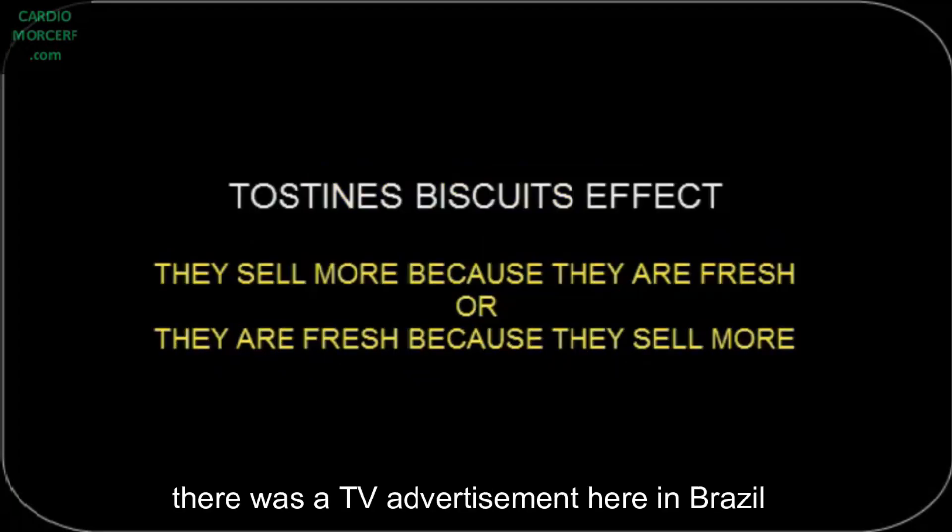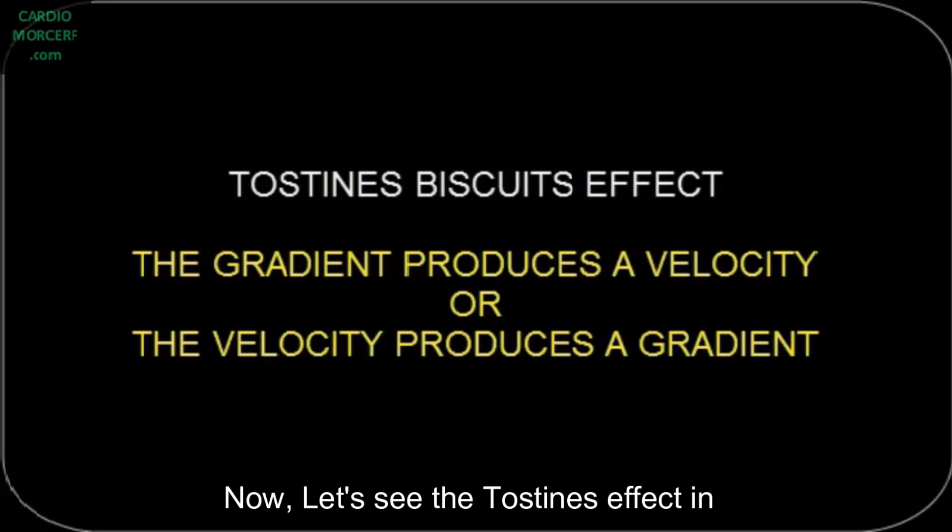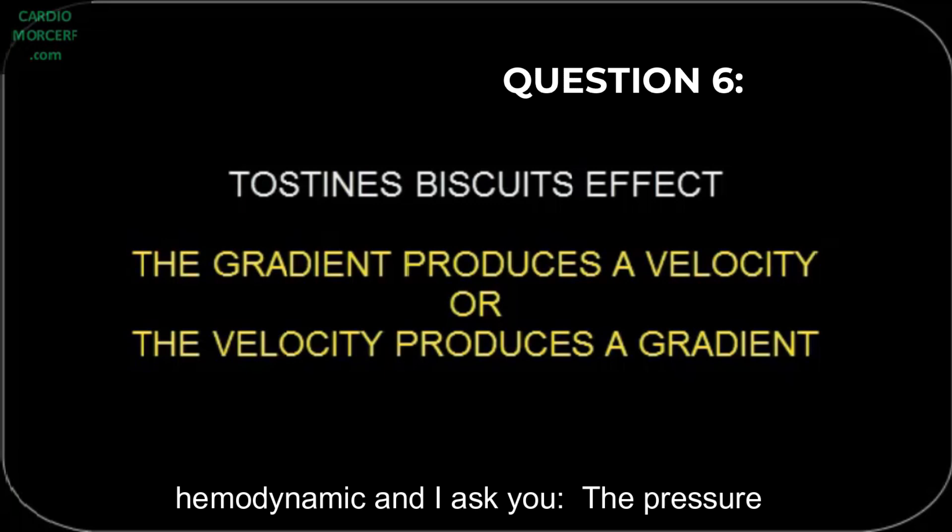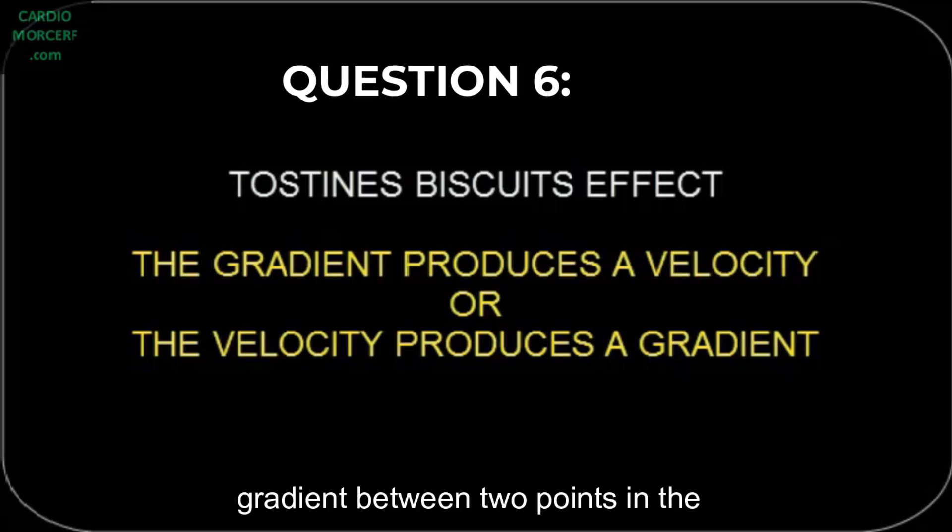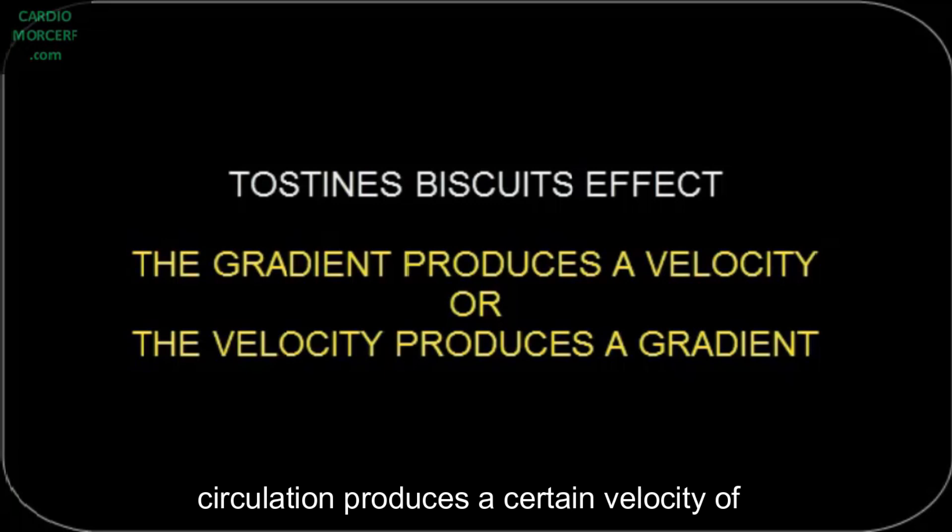Many years ago, there was a TV advertisement here in Brazil of a biscuit cracker named Tostinis. And it said, and I quote, the Tostinis cracker sells much more because they are fresh or they are fresh because they sell much more. Now, let's see the Tostinis effect in hemodynamic. And I ask you, the pressure gradient between two points in the circulation produces a certain velocity of blood flow or a certain blood flow velocity produces a certain gradient.